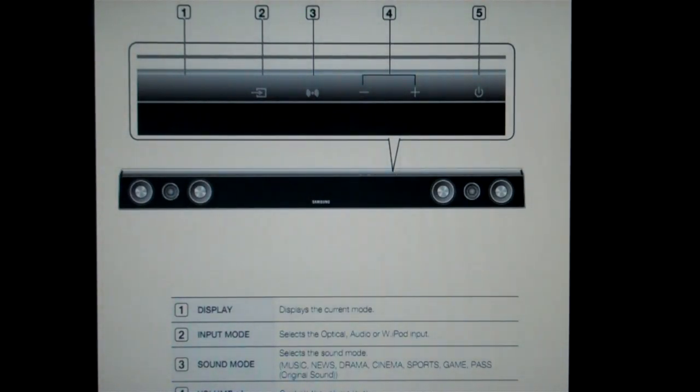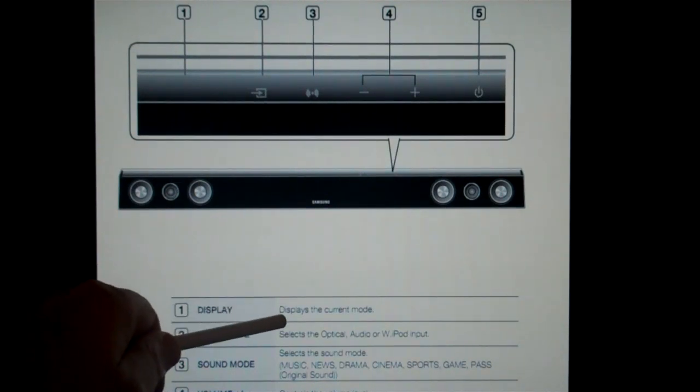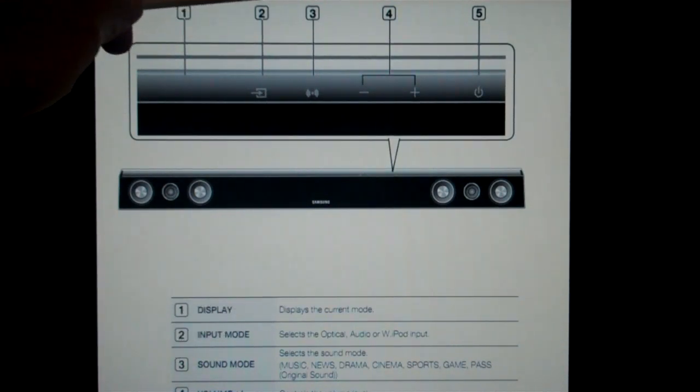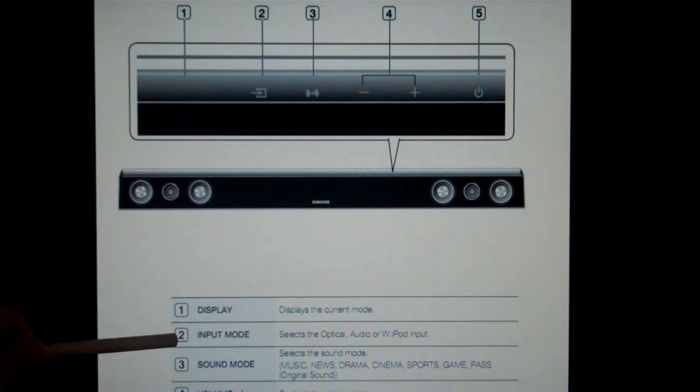This is a depiction of the front control panel on the soundbar itself. The soundbar is a 2 left channel and right channel setup and has 5 controls on the face. Control number 1 displays the current mode you're in.